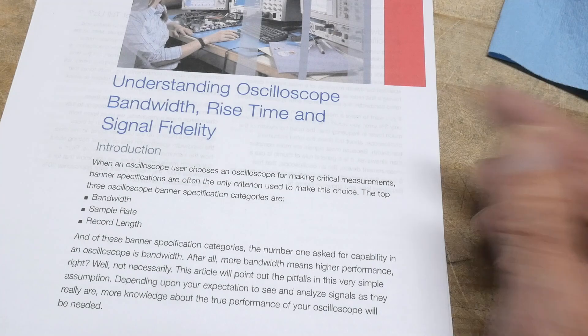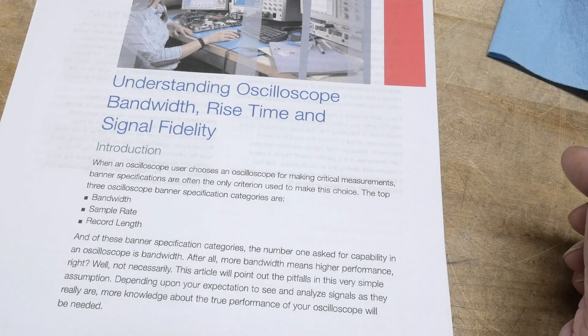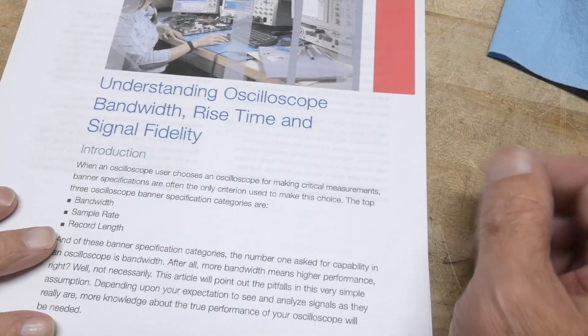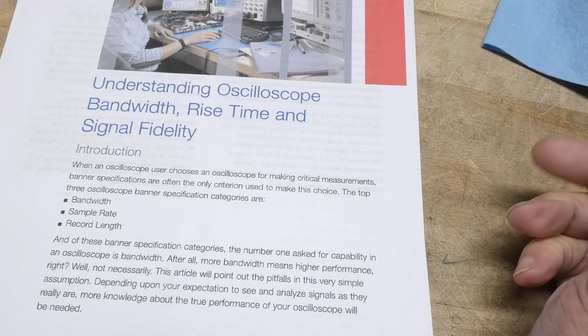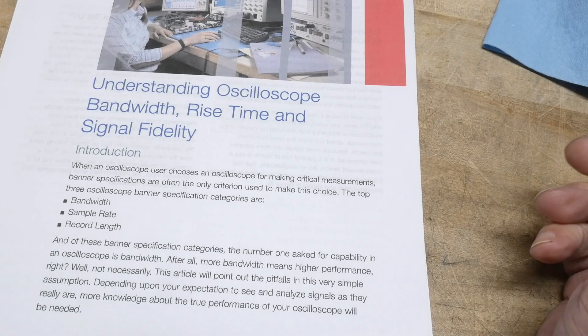So I think it's important that we know where the 0.35 number came from and why they're using different numbers these days. So I'm going to do some mathematics and show you where the 0.35 comes from. And then tell you a little bit of hand wave. But there's a whole bunch of real rigorous math you would have to do in order to derive the 0.4 and the 0.45. But let's go ahead and take a look at where that 0.35 came from.